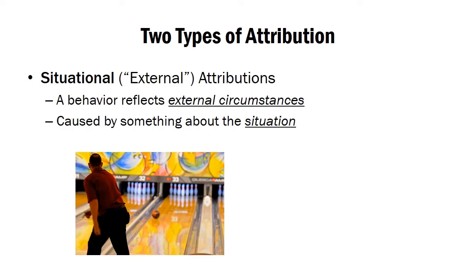You can also draw situational attributions, sometimes called external attributions. In this case, you're saying that some behavior reflects external circumstances — the behavior is being caused by something about the situation, not anything under the individual's control, not anything about the person him or herself, but something external to the person has influenced this behavior to take place.